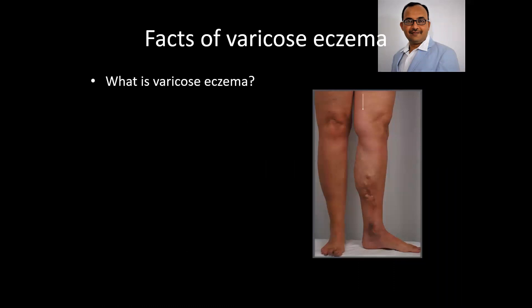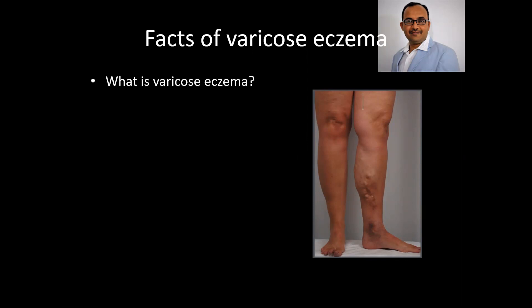So what is varicose eczema? You can see the skin changes here in the ankle region. These are varicose eczema, which typically develops in varicose vein patients. Here you can also see these dilated tortuous varicose veins in the lower leg region. This varicose eczema develops in varicose vein patients and typically involves skin changes near the dependent portion near the ankle region, and the underlying skin is also thickened and harder.